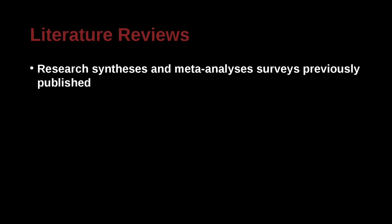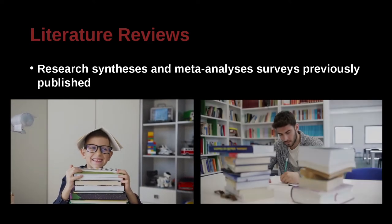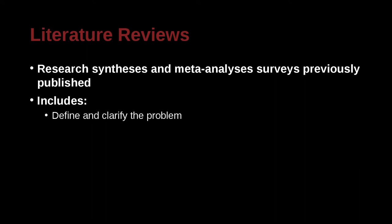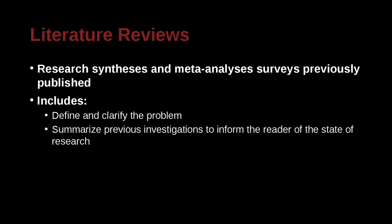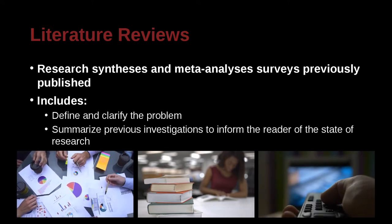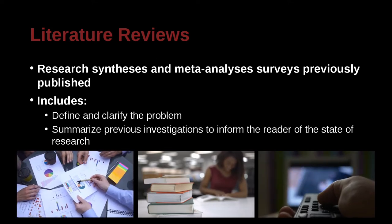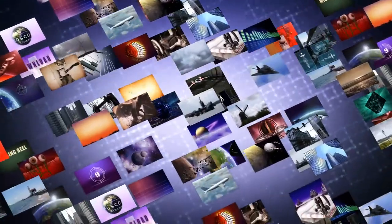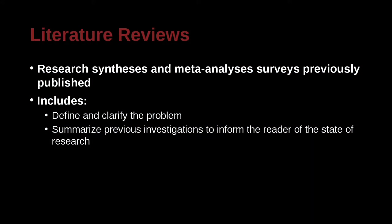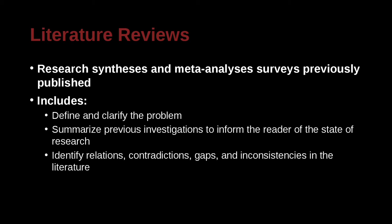Literature review research is a little different. It focuses on collecting information that's already been published — nothing new. It's totally focused on existing work, basically saying what's happened up until now. This can include defining and clarifying the issue or problem, and summarizing research papers, books, videos, and documentary movies that have been published before — perhaps tens or hundreds of sources. You also identify relationships, contradictions, gaps, and inconsistencies in the literature.